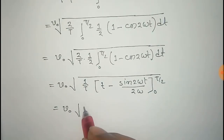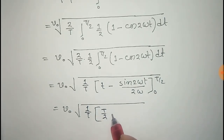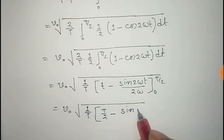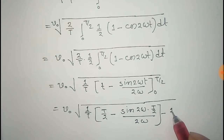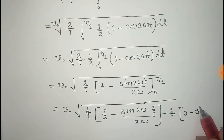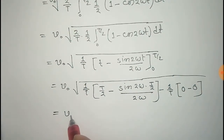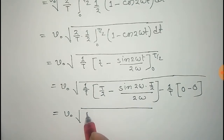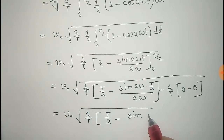That equals V₀ times square root of (1/T). Putting in the upper limit gives T/2 minus sin(2ω × T/2) divided by 2ω. Putting in the lower limit gives 0, and sin(0) is also 0, so the lower limit contributes nothing. This simplifies to V₀ times square root of (1/T) times [T/2 − sin(ωT) / (2ω)].